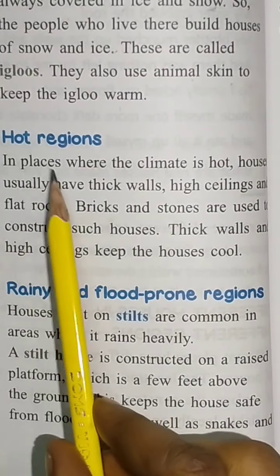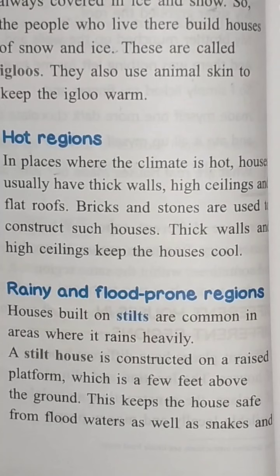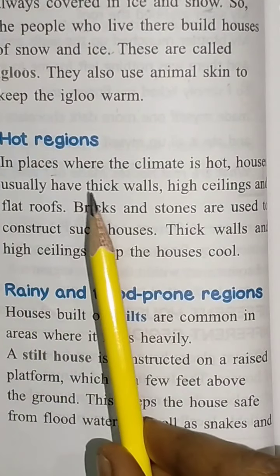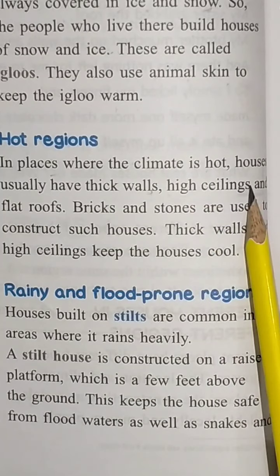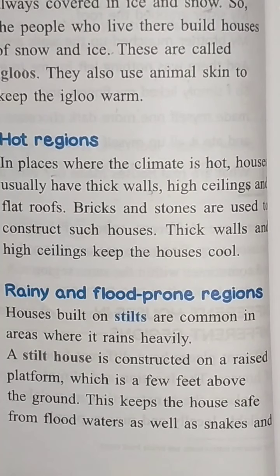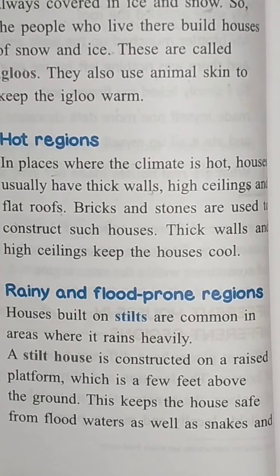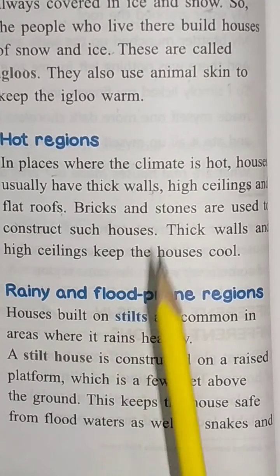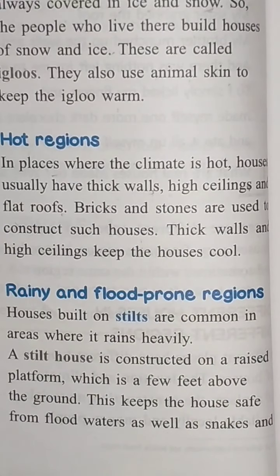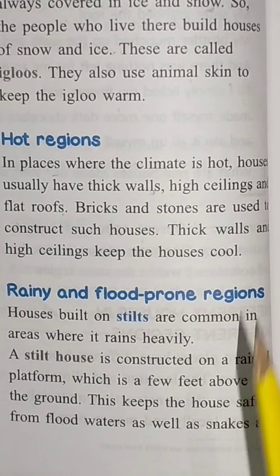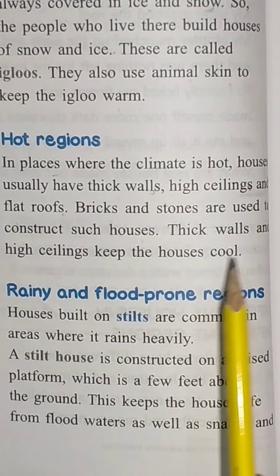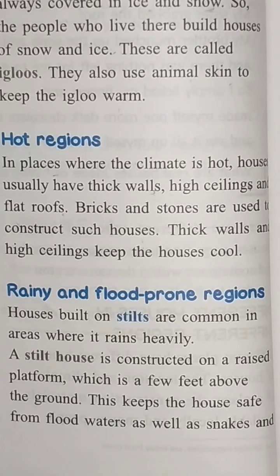In hot regions — in places where the climate is hot, jagaon pe jahan garmi bahut hoti hai — houses usually have thick walls. Unke jo ghar hote hain, unke diware bahut moti hoti hain. High ceilings hoti hain — kawhi unchi ceilings, matlab chat hoti hai. And the flat roofs — uske jo roof hote hain, woh flat hote hain, slope wale nahi hote. Bricks and stones are used to construct such houses. Thick walls and high ceiling keep the houses cool.